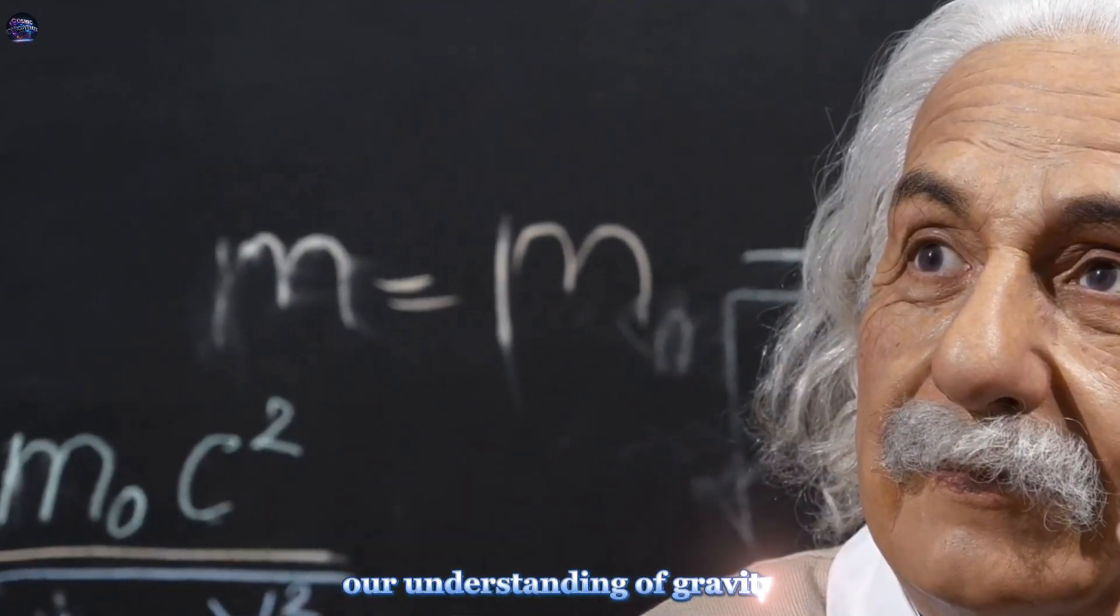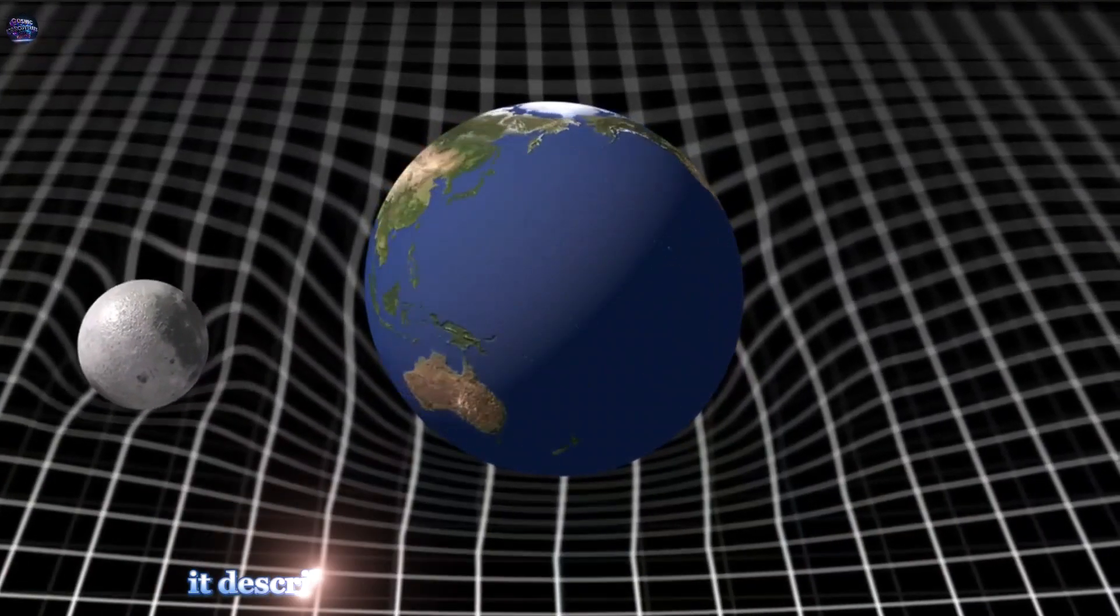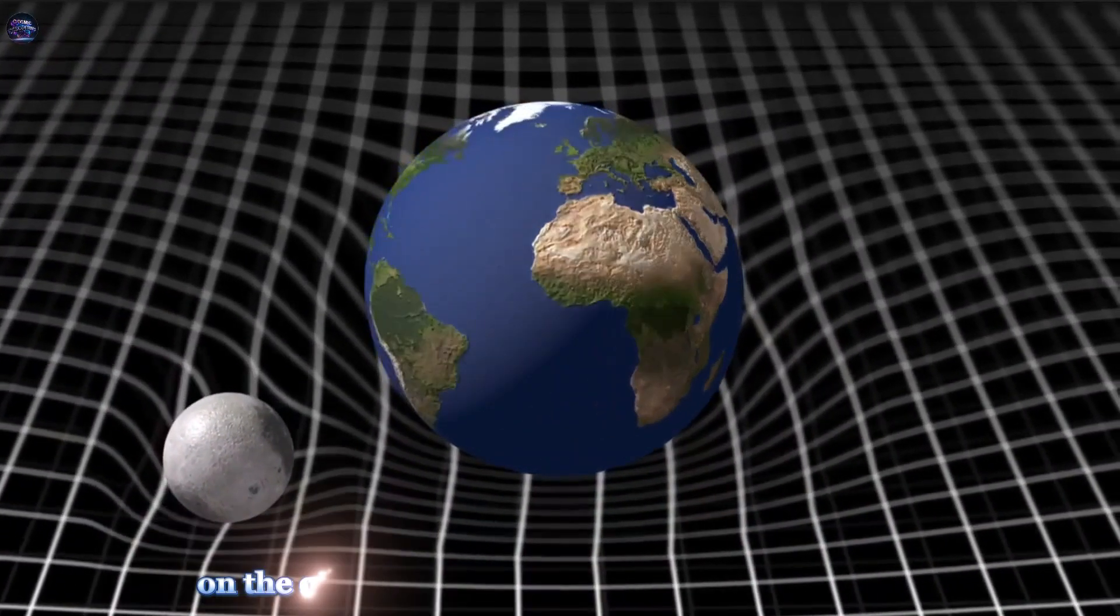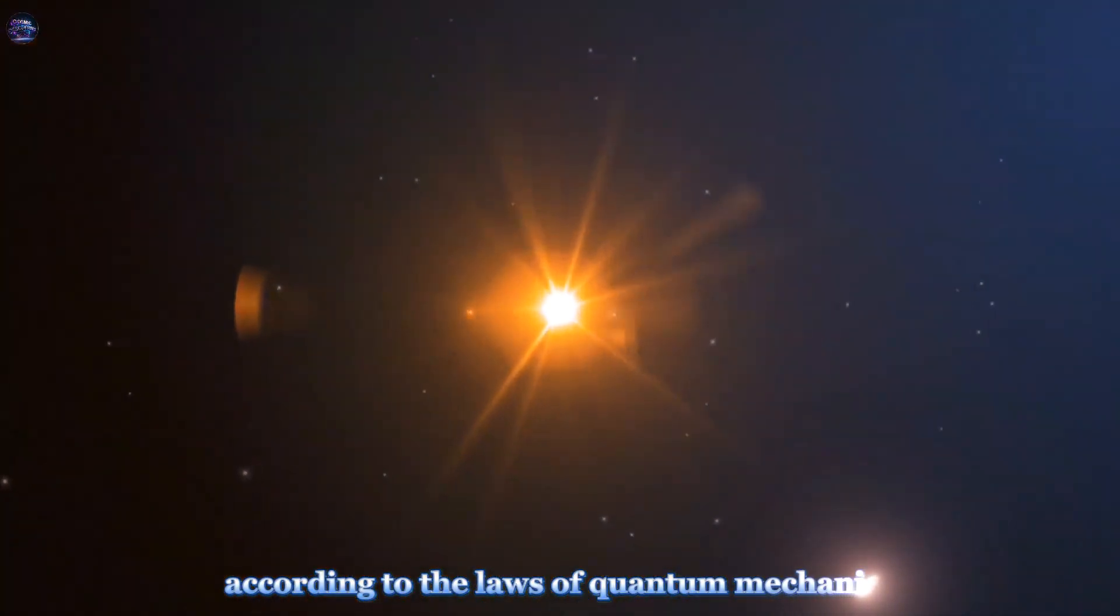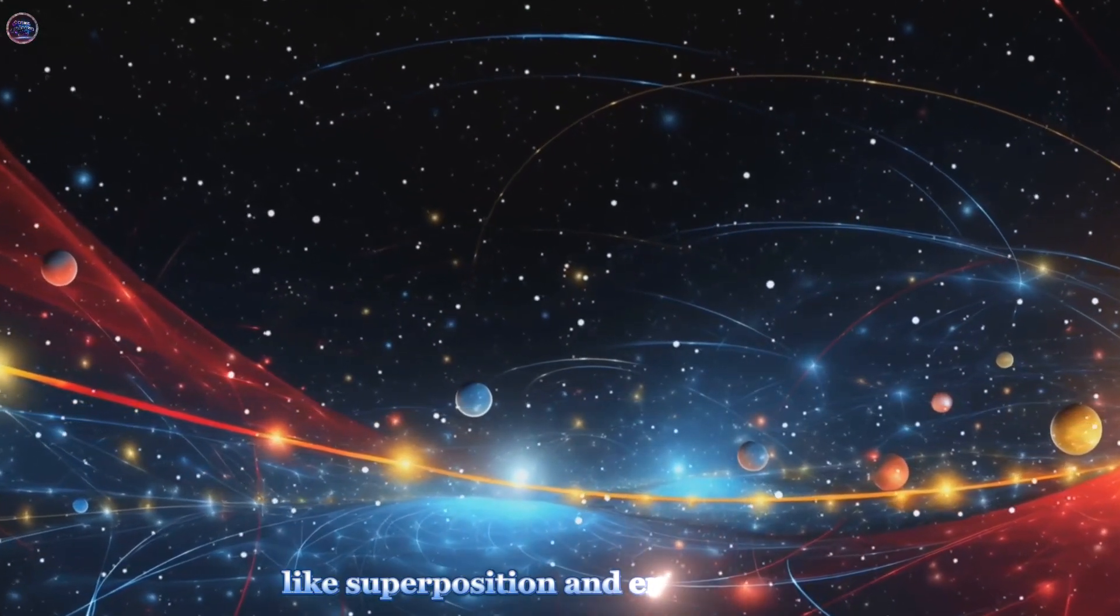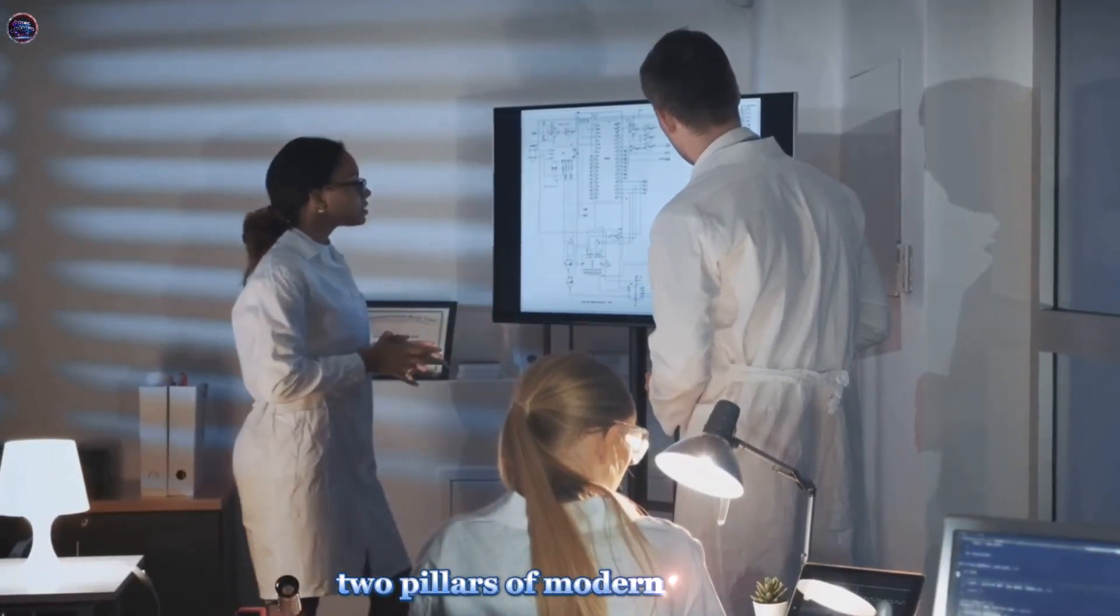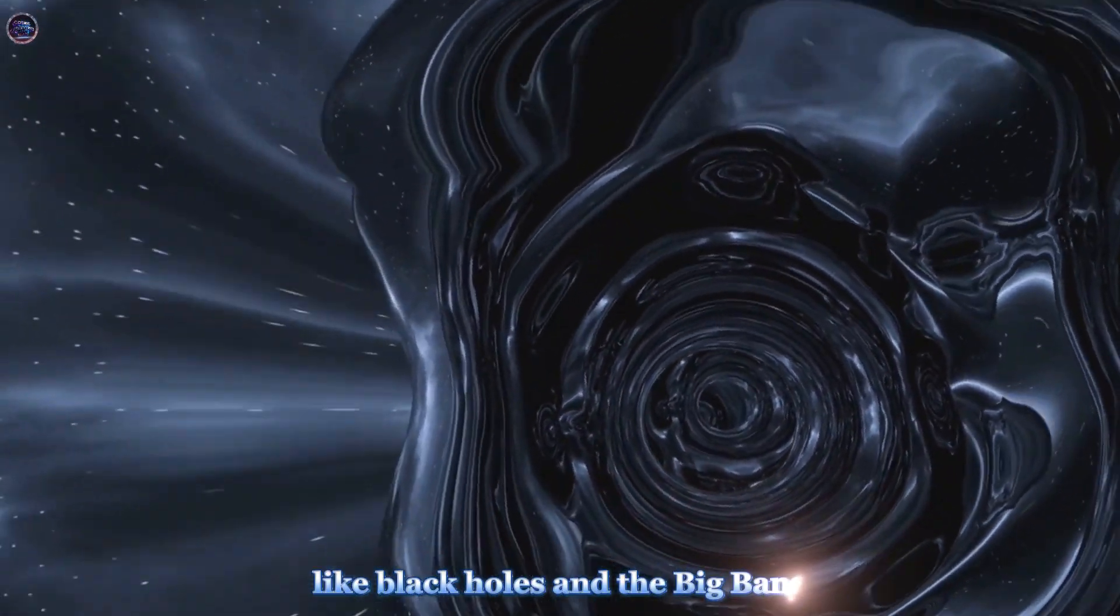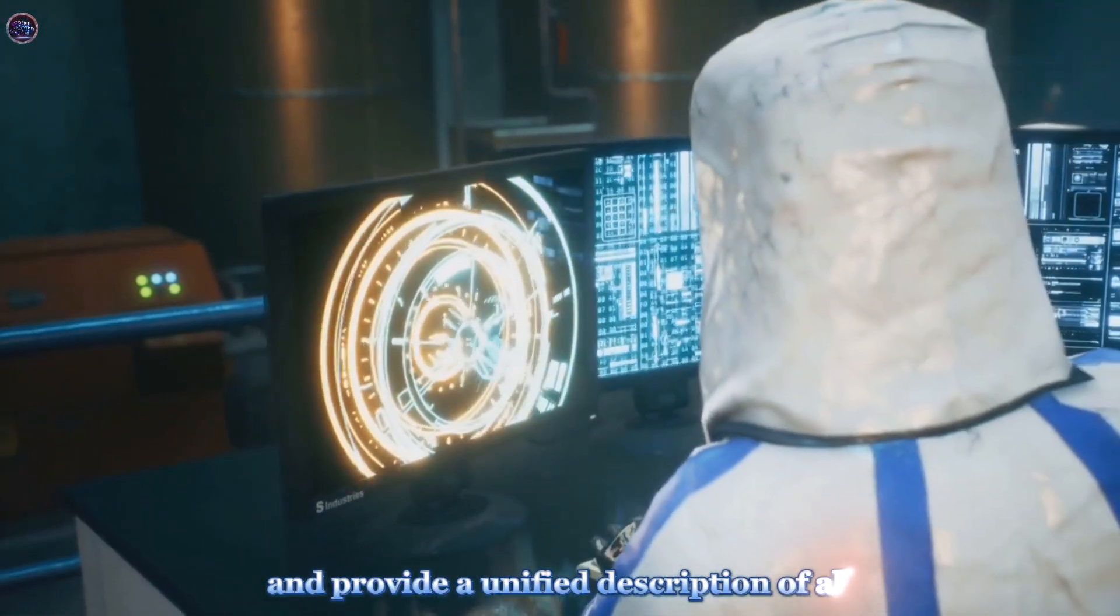Our understanding of gravity is rooted in Einstein's theory of general relativity. It describes gravity as the curvature of space-time caused by mass and energy. On the other hand, the subatomic world operates according to the laws of quantum mechanics. It describes particles as waves and introduces concepts like superposition and entanglement. The challenge lies in reconciling these two pillars of modern physics. They seem incompatible at the smallest scales like black holes and the Big Bang. Quantum gravity seeks to bridge this gap and provide a unified description of all forces in the universe.